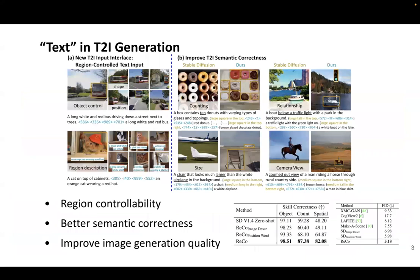As a result, when applying such grounded region-controlled text as the new input for text-to-image generation, we observe the following intriguing properties: better region controllability, better text-to-image semantic correctness, and better image generation quality. First, as shown in the left image, it provides the desired region controllability that users can flexibly manipulate the location of a specific object or specify the text description for a specific precise region. Such region controllability is critical for various applications.